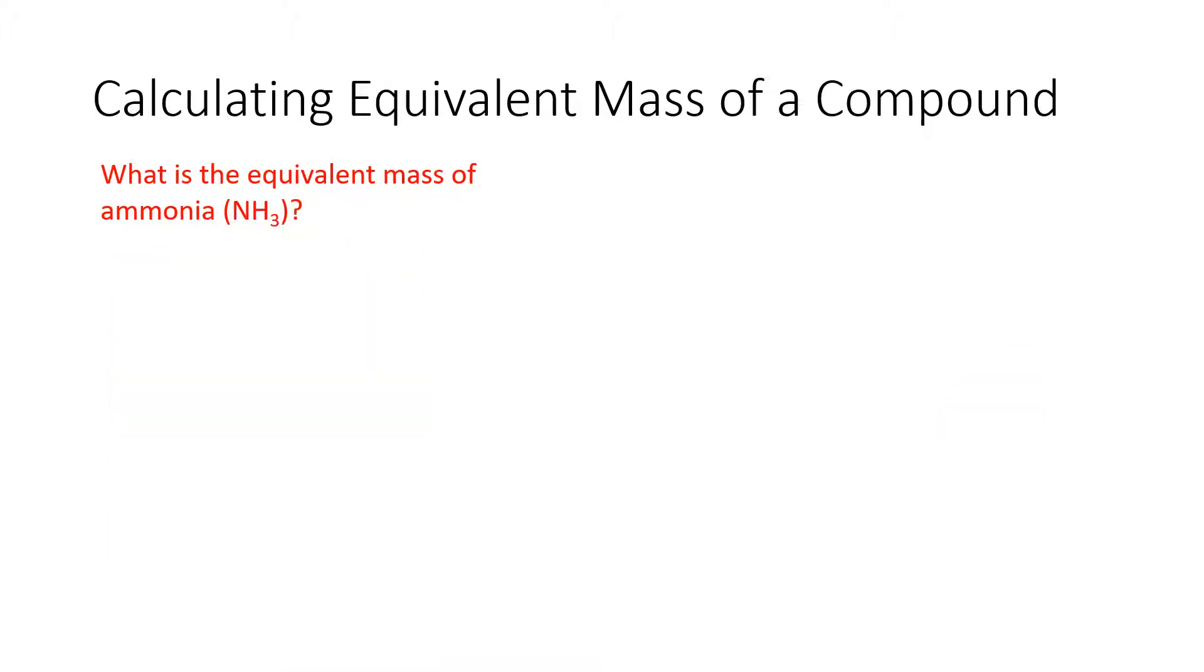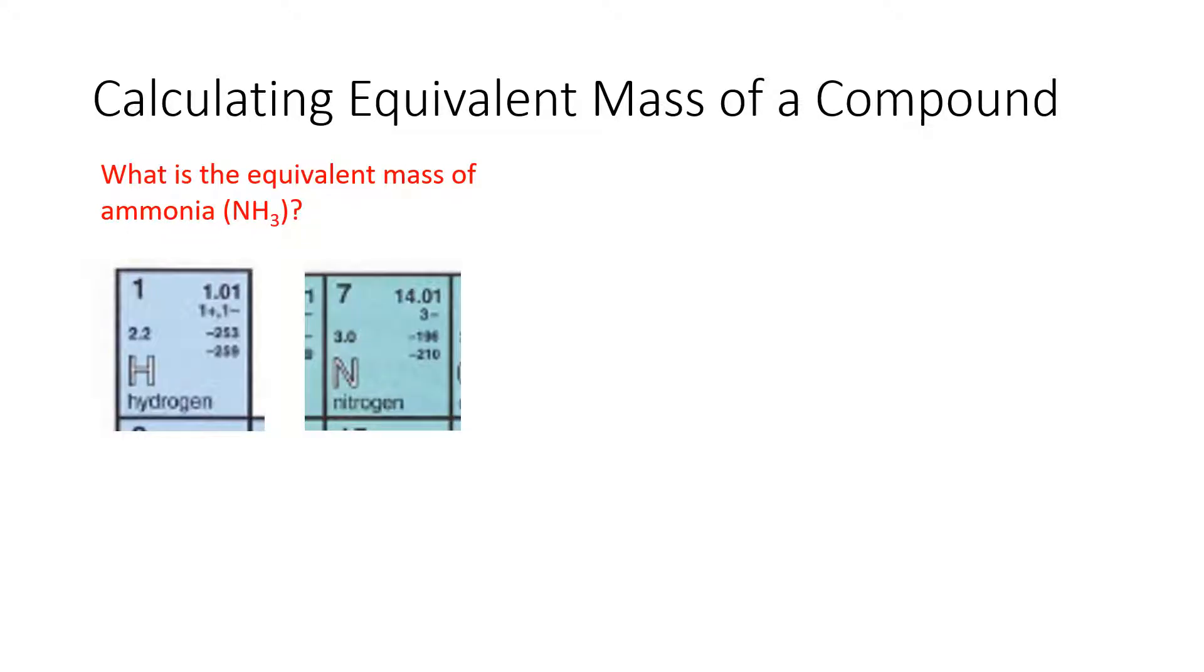The next type of question is we might have to find the equivalent mass of a compound. In this case we're going to look at ammonia which is NH3. So once again we go to our periodic table and we find hydrogen and nitrogen. We look up their molecular masses and their valences. We can see that hydrogen's molecular weight is 1.01. We know that there are three of them in NH3 so we multiply by three. The molecular mass of nitrogen is 14.01 and there's only one of them so no multiplying needs to happen.